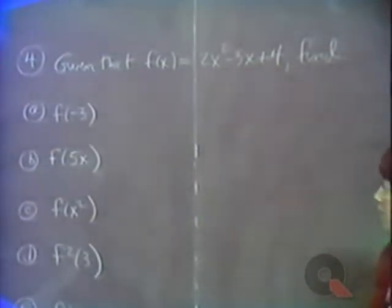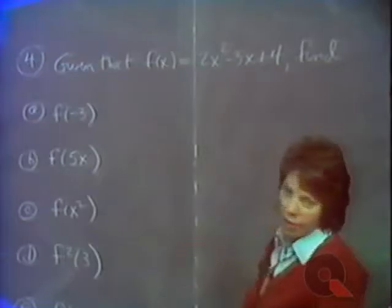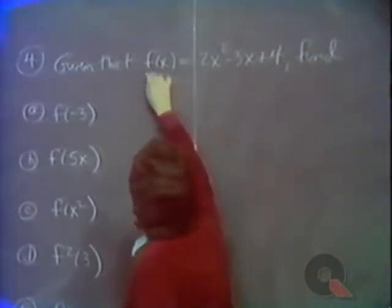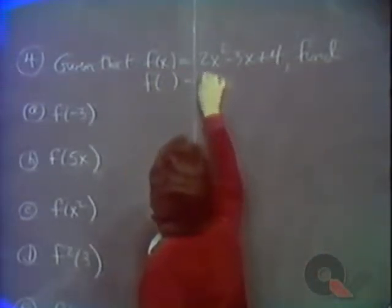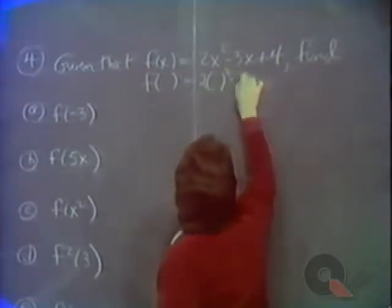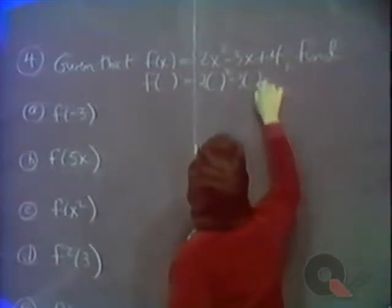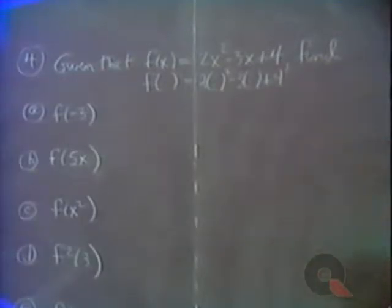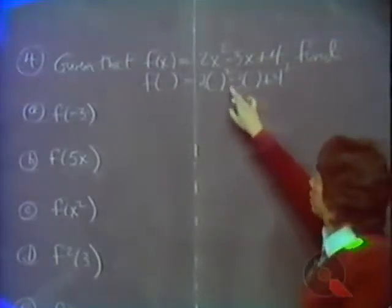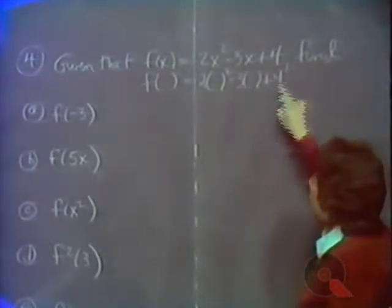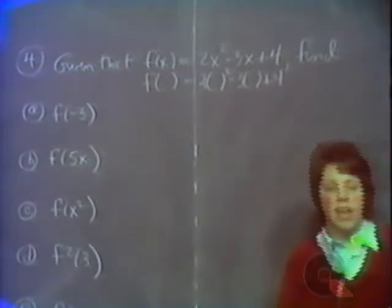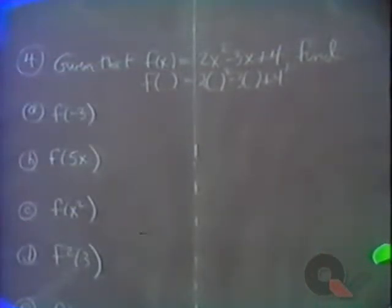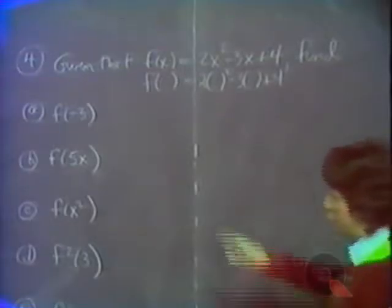The x is, in a sense, a dummy variable — just a placeholder. In fact, you could rewrite the function so that it would be ready to receive whatever you might feed in: f of something is 2 times that something squared minus 3 times that something plus 4. Because anytime I see an x, I'm just writing parentheses. We are now set up to evaluate anything you want.